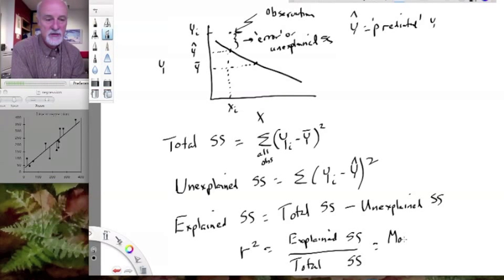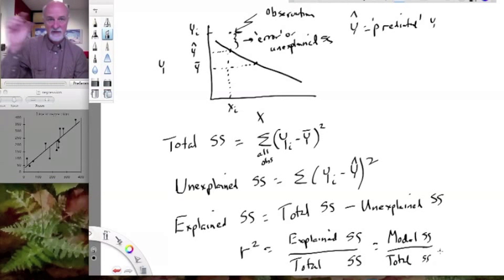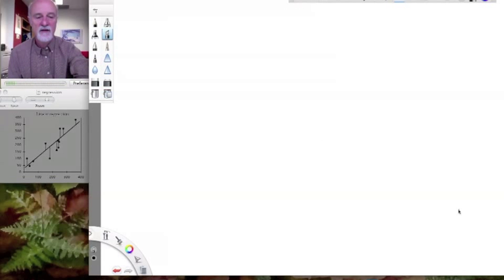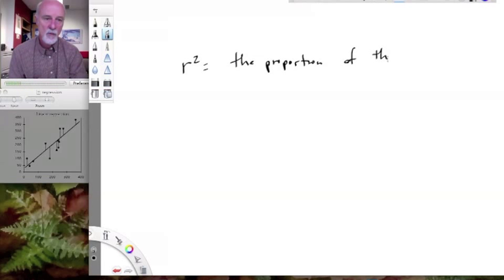So R squared is going to be explained sums of squares divided by total sums of squares. And, in fact, if you look at SAS jump output, it's going to be the model sums of squares divided by the total sums of squares. So jump gives you a model sums of squares, which is the sum of all our X factors sums of squares, and that's the explained part. And then dividing by that plus the error, which is the residual sums of squares. So, essentially, it's giving you that fraction. And so you can think of R squared as being the proportion of the variation in Y explained by variation in X.